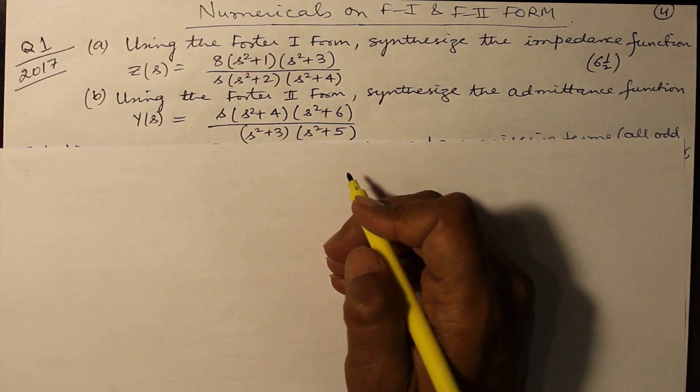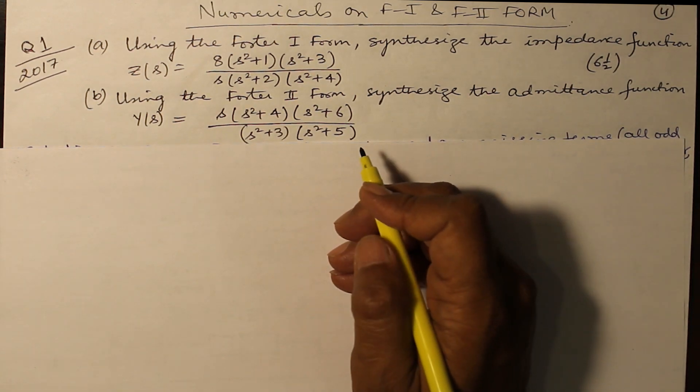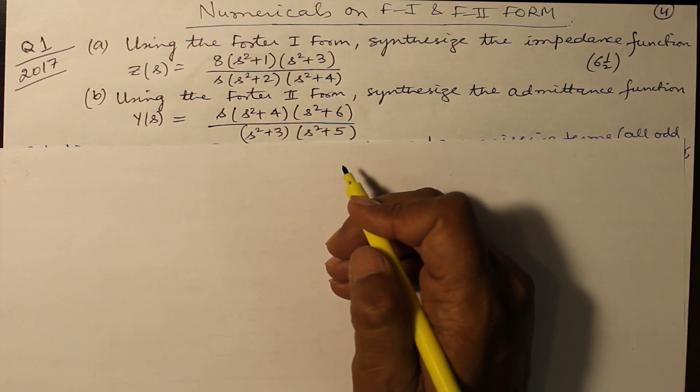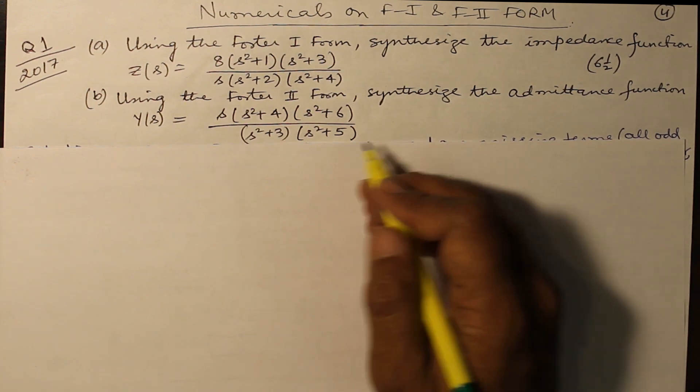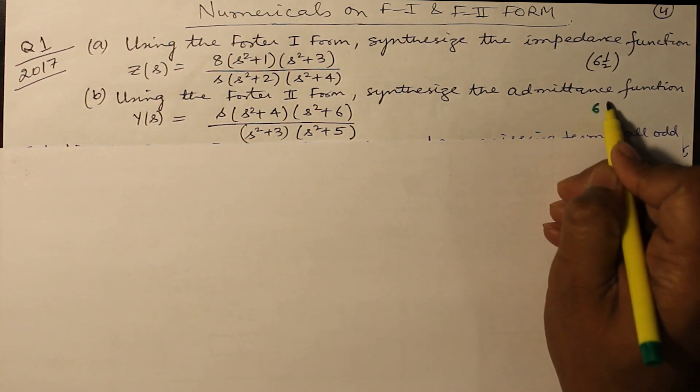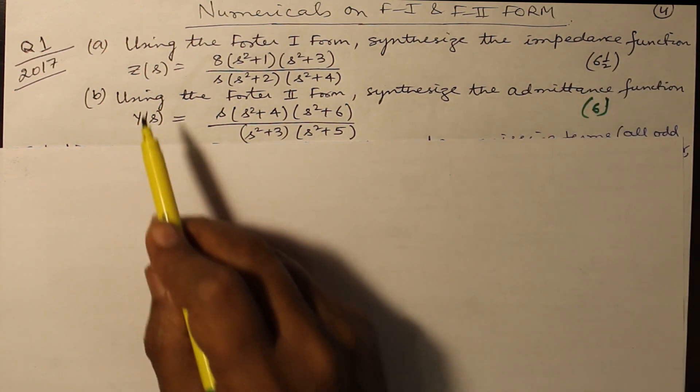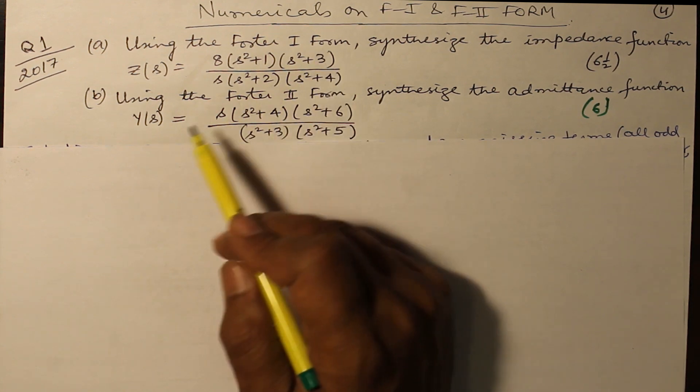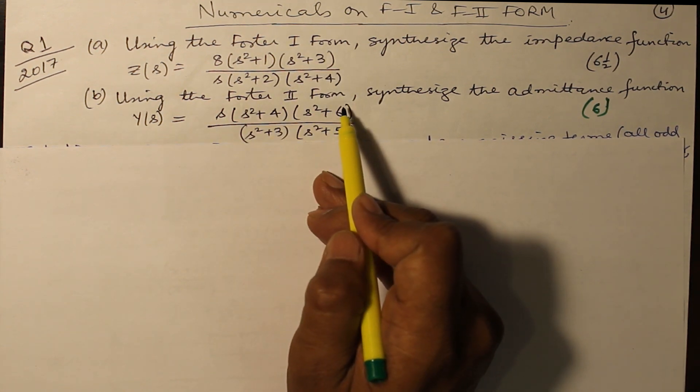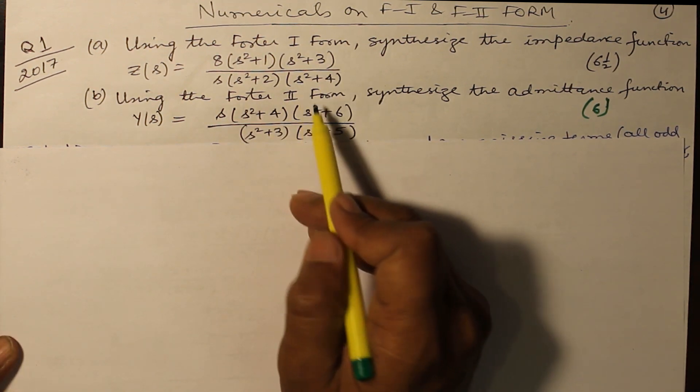As I told you in the previous slide, Foster I and Foster II forms definitely have a numerical. Let's see the 2017 paper where there was a 12.5 mark question. 1A was on Foster I, 1B was on Foster II. The questions are different, you can see very well.